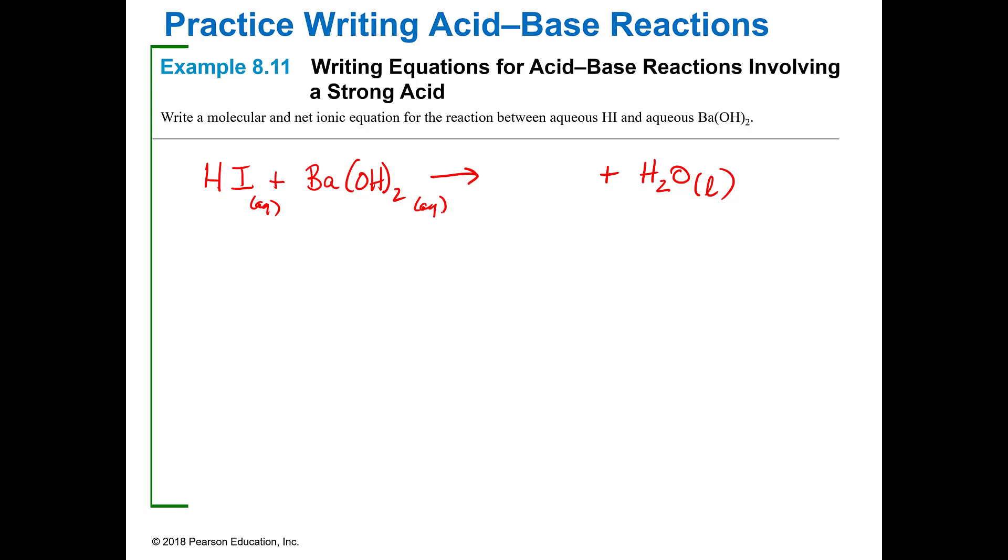And the reason it's a liquid is because we leave it together when we write it, otherwise nothing would be happening. So you've got HI aqueous and barium hydroxide aqueous, and then the product of that is going to be barium, and barium is a +2, and so it's going to be BaI2.